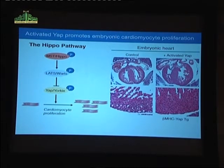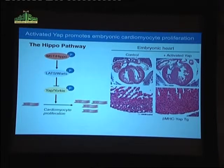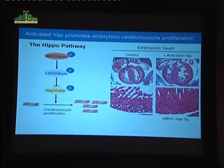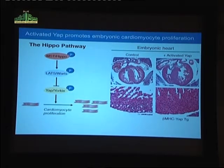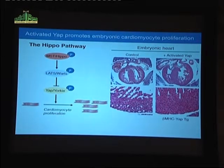Norbert Bardeesy described an ancient signaling system that controls cell proliferation in organisms ranging from fruit flies to mammals — known as the Hippo pathway. This is comprised of a series of kinases and adapter proteins that transmit growth signals from the cytoplasm and the exterior of the cell to the nucleus. The terminal transcription factor in this pathway is called YAP in mammals and Yorkie in fruit flies. We tested whether this pathway might be involved in the control of cardiomyocyte proliferation.